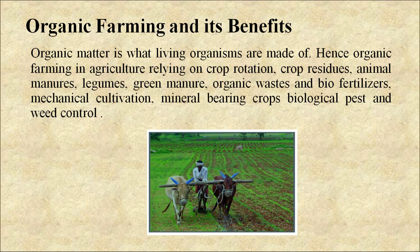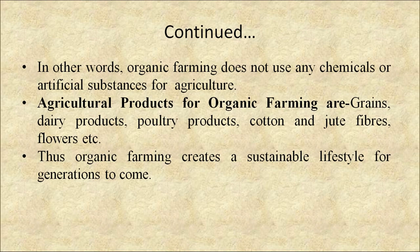Now come to organic farming and its benefits. Organic matter is what living organisms are made of. Organic farming in agriculture relies on crop rotation, crop residue, animal manure, legume, green manure, organic waste and biofertilizers, mechanical cultivation, mineral-bearing crops, and biological pest and weed control. In other words, organic farming does not use any chemicals or artificial substances for agriculture. Agricultural products from organic farming include grain, dairy products, poultry products, cotton and jute fibers, and flowers. Thus, organic farming creates a sustainable lifestyle for generations to come.